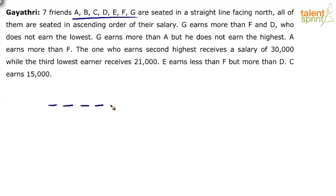So we have 7 positions: 1, 2, 3, 4, 5, 6, 7. These are the 7 positions. Now, they have been seated in ascending order of their salary — based on their salary.